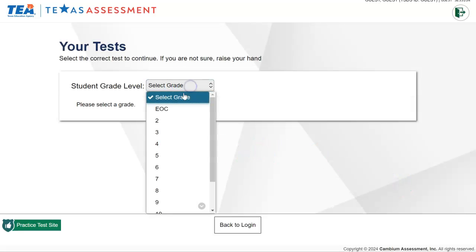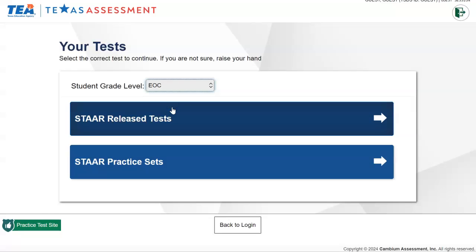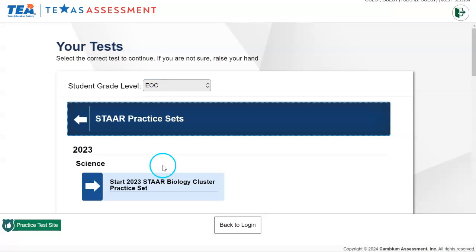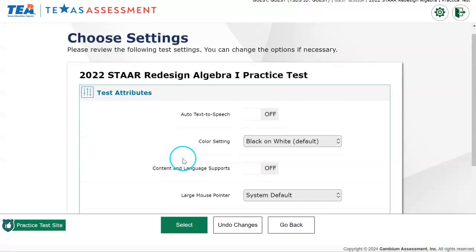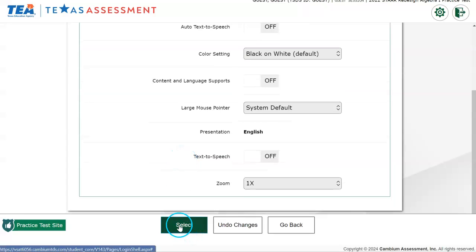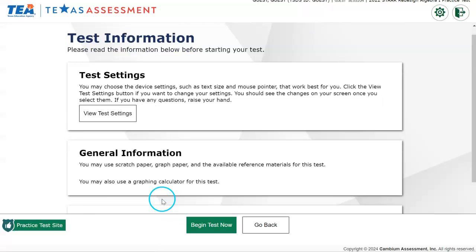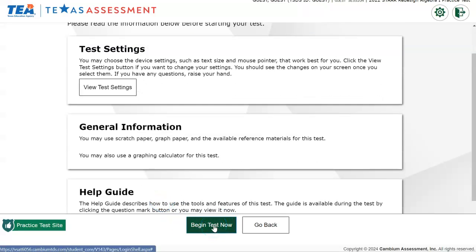Next, choose your grade, and you will choose EOC. Click on Star Practice Sets, scroll down to Mathematics, and choose the Star Redesign. Scroll down, choose Select, and then Begin Test Now.